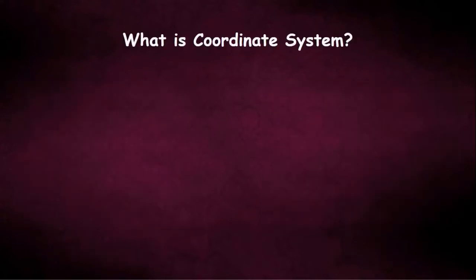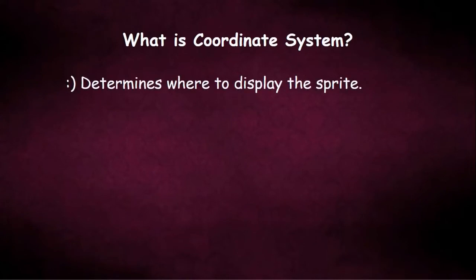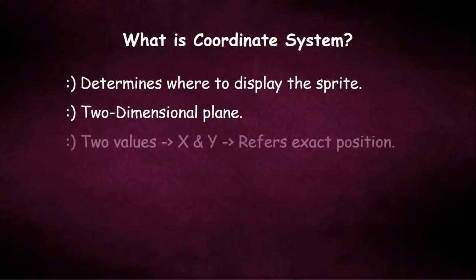What is coordinate system? Through this coordinate system, the scratch determines where to display the sprite on the stage. And it is a two-dimensional plane which means each and every point has two values to locate or to reference its exact position.